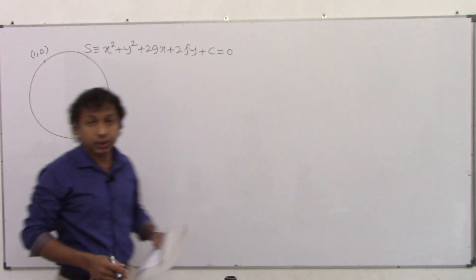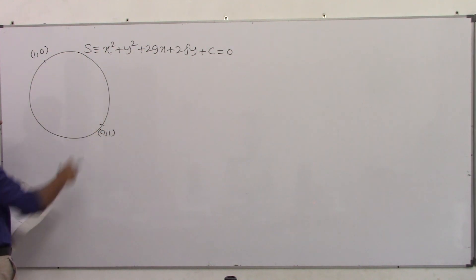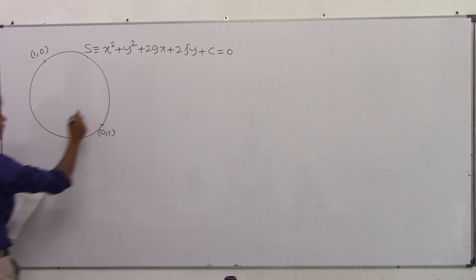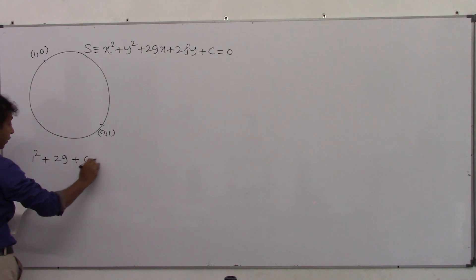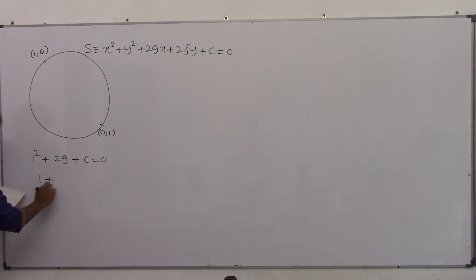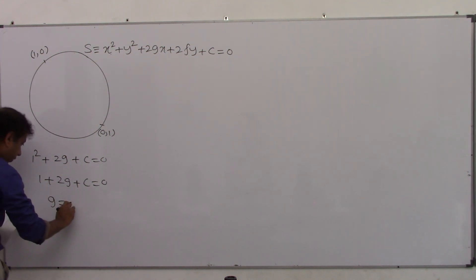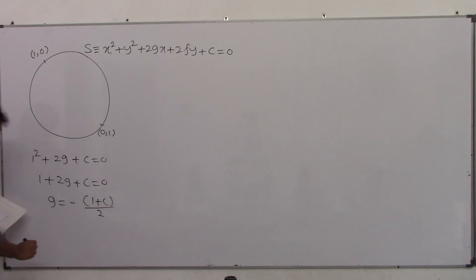Since this circle passes through the points (1,0) and (0,1), these coordinates must satisfy the equation. Let me put x=1 and y=0: we get 1+2g+c=0. From this we can express g as -(1+c)/2.